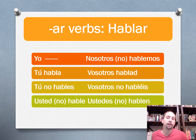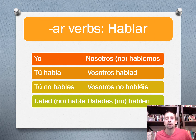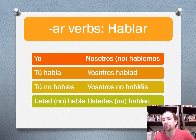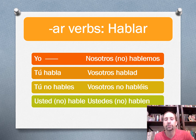So if we take a look at our verb chart for hablar, how AR verbs are going to work, we've got two affirmative and two negative. Usted and ustedes forms, we've got some nosotros, and there's going to be some exceptions to the rule for that. And then also vosotros. So we're going to break this all down in the video, part by part.